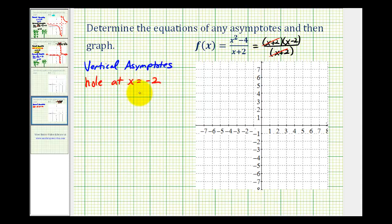So it is important that we try to identify any possible holes before we determine our vertical asymptotes. And notice how this function now simplifies to just x minus two.